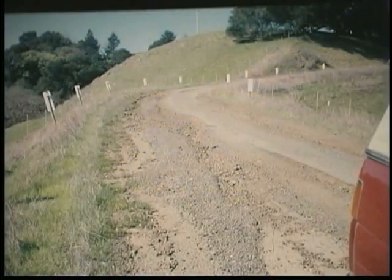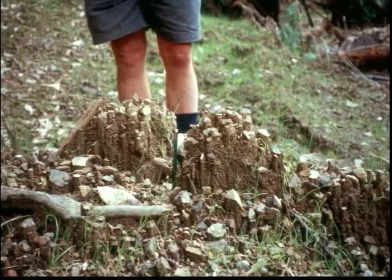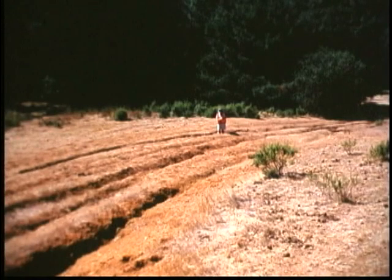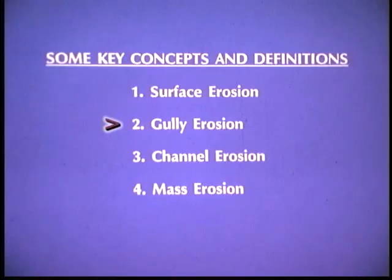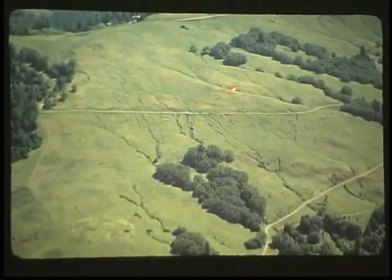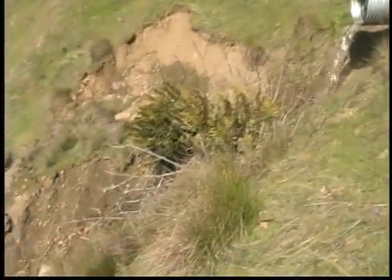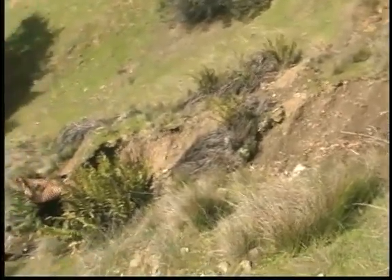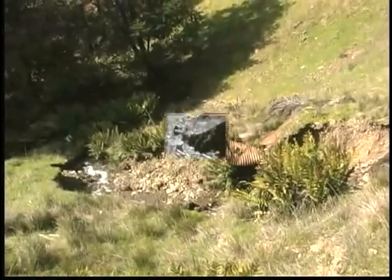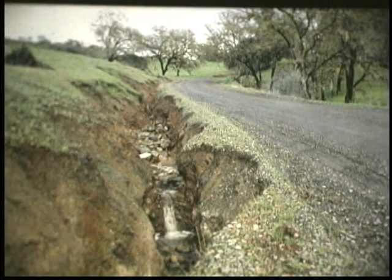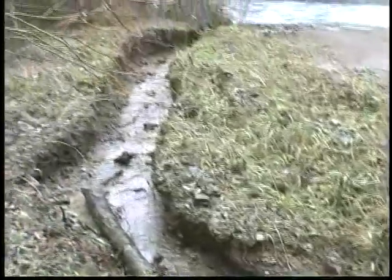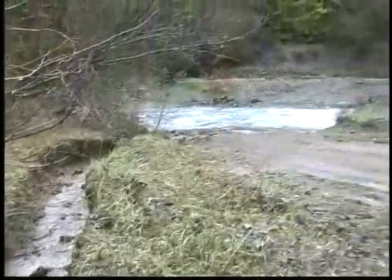Surface erosion involves sheet erosion or the disaggregation of particles from raindrop impact and the movement of those particles in small channels up to what they call rills. Once the rills combine into channels that are more than about a square foot in cross section — a foot wide and a foot deep — they're called gullies. Gullies are newly formed channels where you've collected and concentrated water, diverted it across the hillside or across bare soil. If you don't remove the water from it, it's going to continue to evolve until it develops a quasi-stable cross-sectional dimension of a newly developing stream channel.